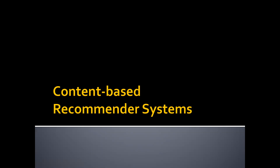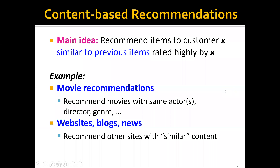Let's start with the first approach, which is content-based recommender system. The main idea of a content-based recommender system is to recommend items to a user by finding items similar to previous items rated highly by that user. For example, in the case of movie recommender systems, we can recommend movies with the same actors, directors, or genre to the user.